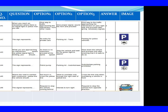Question 142: The sign represents. Option 1: No entry for private cars. Option 2: Parking lot for taxis. Option 3: Parking for police vehicles. The right answer is Option 2: Parking lot for taxis. Question 143: While you are approaching an intersection where the yellow signal light is blinking, you should. Option 1: As there is no restriction, proceed at the same speed. Option 2: Stop the vehicle and wait for the green light to appear. Option 3: Slow down the vehicle and proceed only after ensuring that it is safe to do so. The right answer is Option 3.